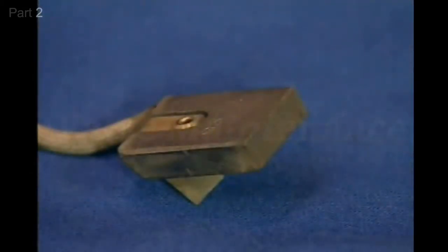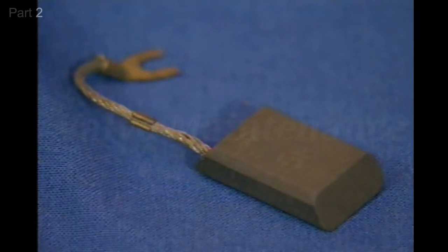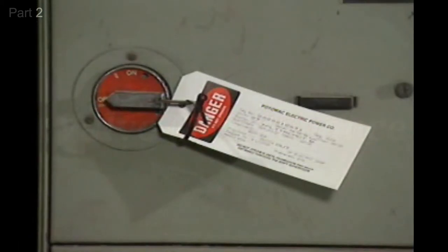Now that we've examined some problems commonly associated with brushes, and we've seen what a good brush looks like, let's see what's involved in maintaining brushes and brush rigging. To begin, the power to the motor is shut off, and the motor is locked and tagged according to plant procedures.